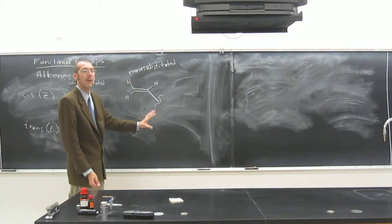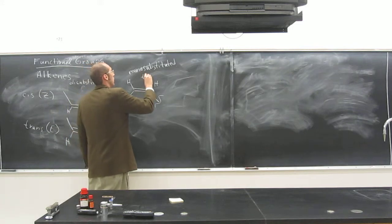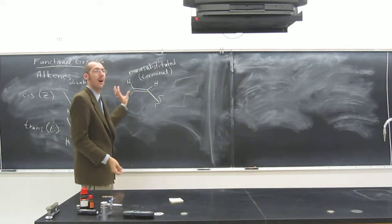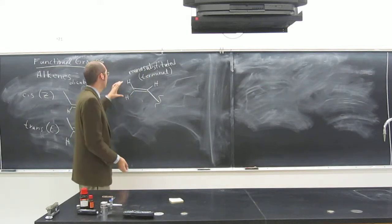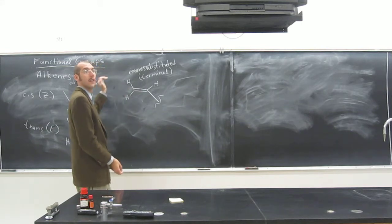Monosubstituted or we can call these terminal alkenes. Why? Because they're always at the end of a chain. Because we got a hydrogen here, right? We can't add anything onto the other side of the chain.